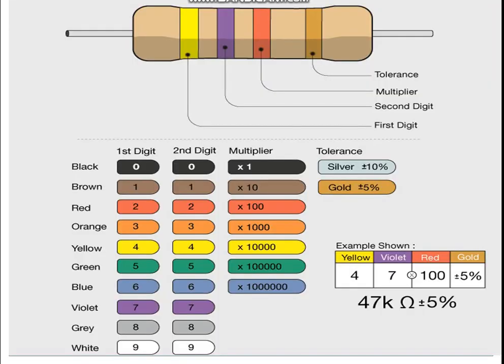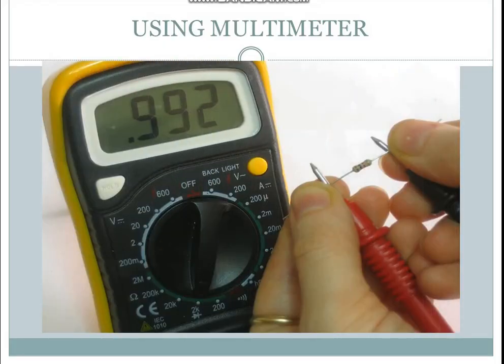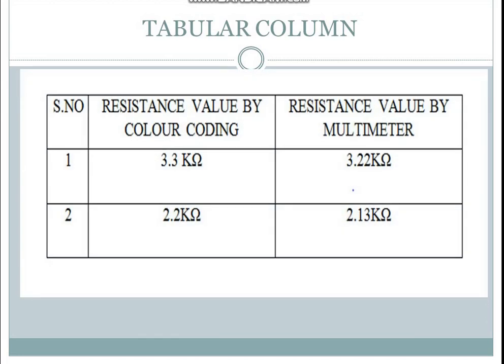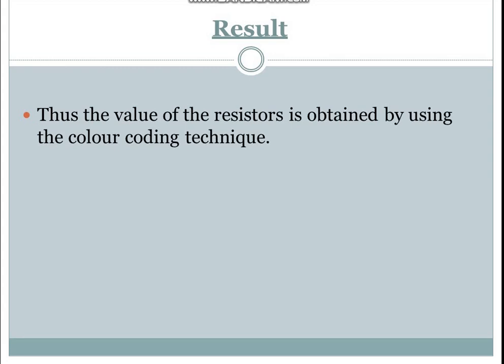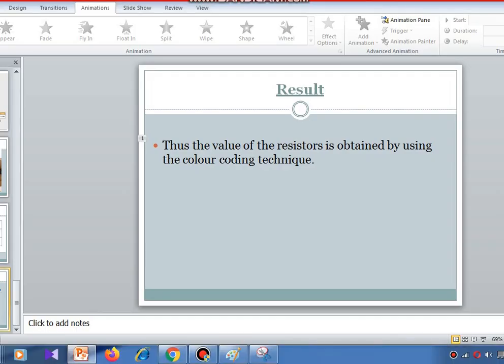In this way we calculate the resistor value using the resistor color coding chart. After finding the theoretical value, we also find the resistor value practically using a multimeter. We then note both values in a tabular column — the resistance value by color coding and the resistance value by multimeter. The result: the value of resistors is obtained using the color coding technique. Thank you, students.